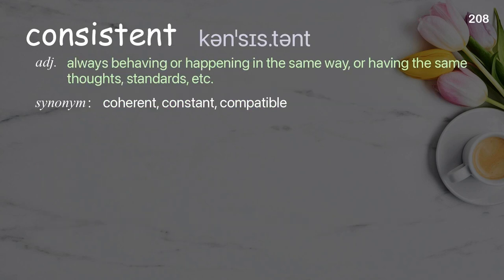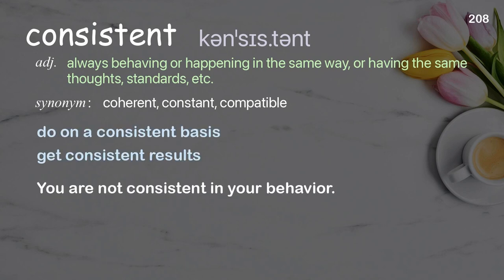Consistent: always behaving or happening in the same way, or having the same thoughts, standards, etc. Examples: do on a consistent basis; get consistent results. You are not consistent in your behavior.